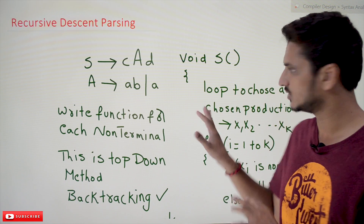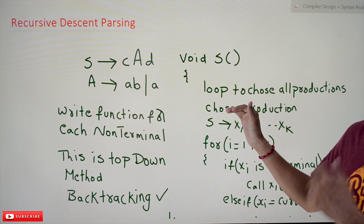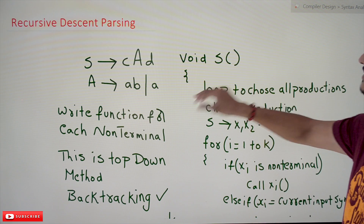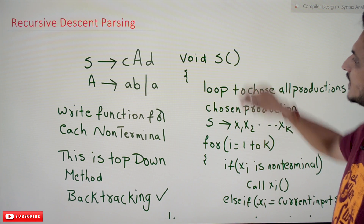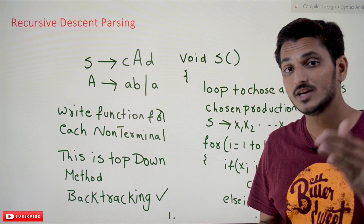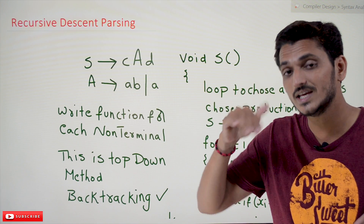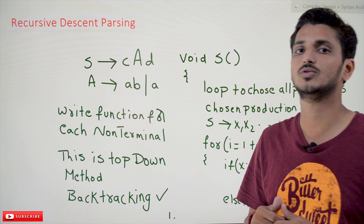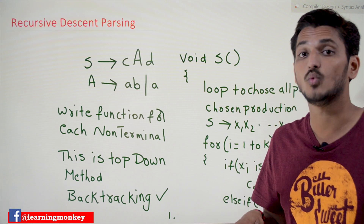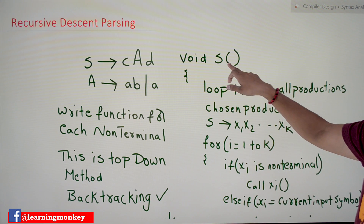For each non-terminal we are going to write a function. We will discuss step by step how these recursive descent parsing functions work. This programmatic intuition for grammar is provided in our Theory of Computation course. If you don't know what context-free grammar means, please watch those classes and come back here.